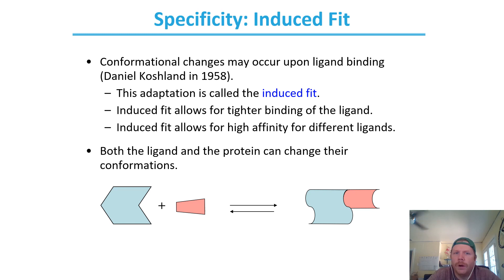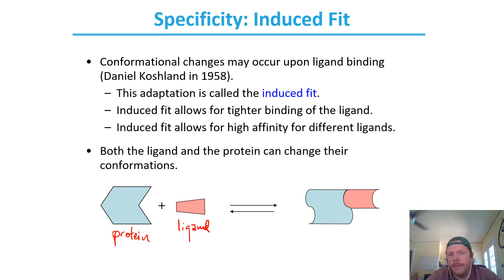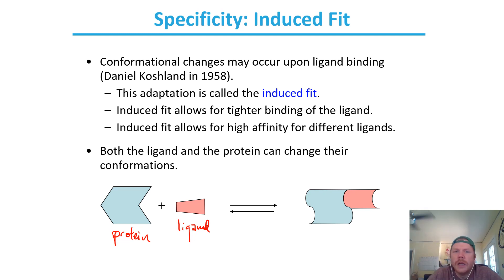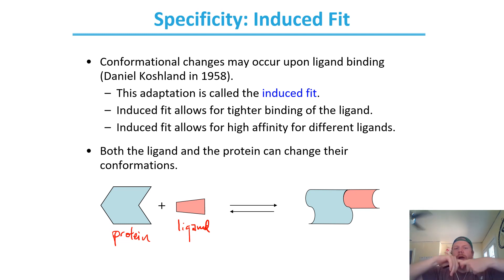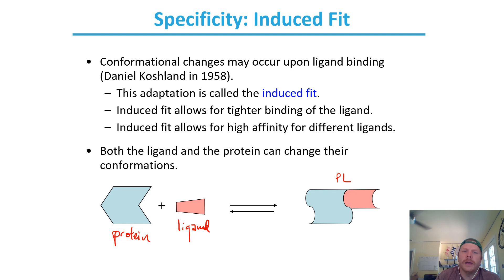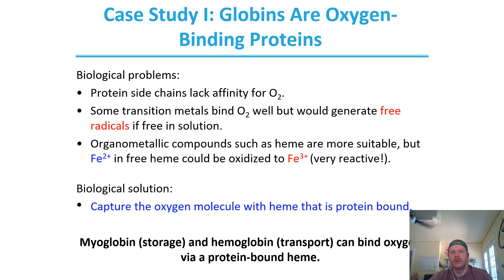Another proposal from Daniel Koshland was the induced fit model of ligand-protein interaction. In this model, the protein is not necessarily positioned to directly take on the substrate. Instead, the substrate imposes its will on the protein, and likewise the protein imposes its will on the ligand. There is some slight conformational change in both the protein and the ligand that enables their interaction — that's the induced fit model of enzyme-substrate or protein-ligand interactions.